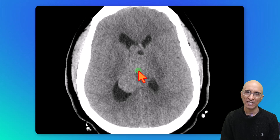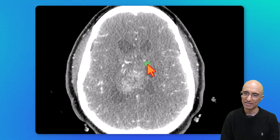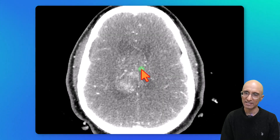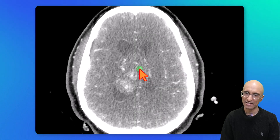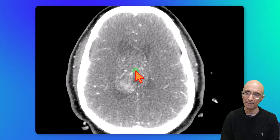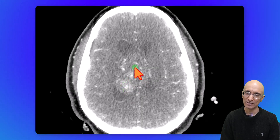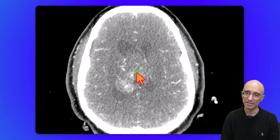The patient underwent CT angiogram as part of the pre-surgical workup. On the CTA, we can clearly see increased vascularity or neovascularity within the mass, and there are a few heterogeneous regions of enhancement within the mass.